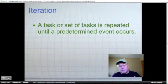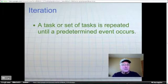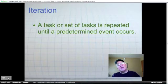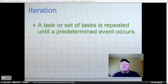The third logical construct is iteration. That's a $10 word for repetition. A task or set of tasks is repeated until a predetermined event occurs. We'll come back one more time to our gross pay calculation program, and we'll add iteration to it, so that we can perform it over and over again until we signal that we're done.